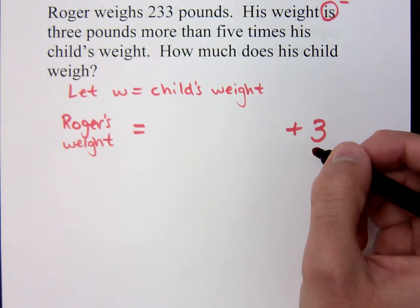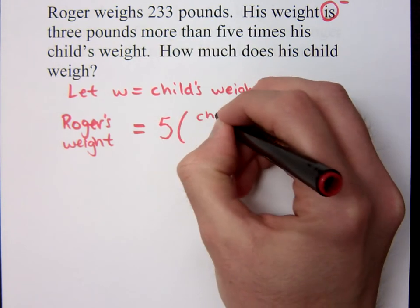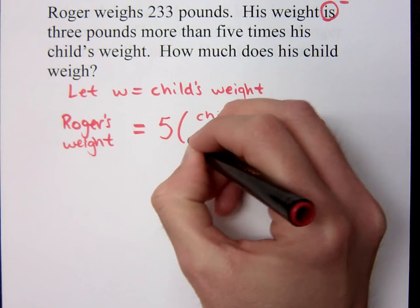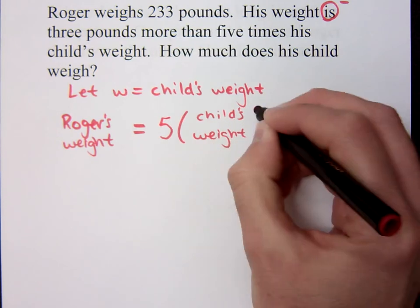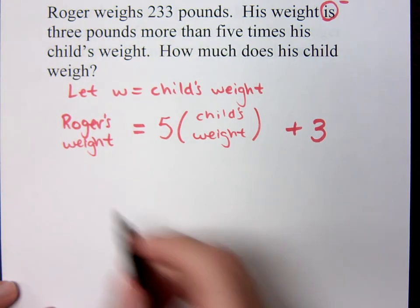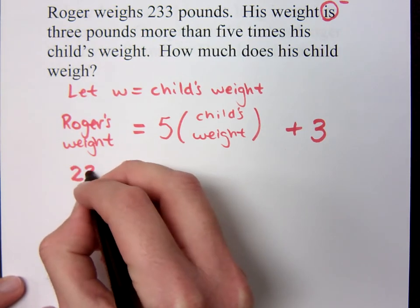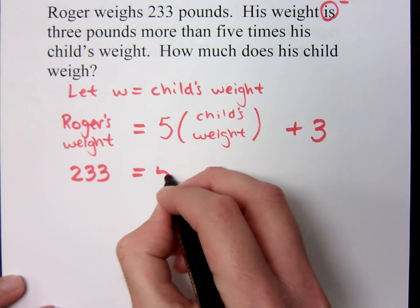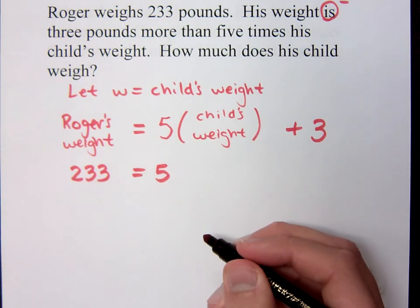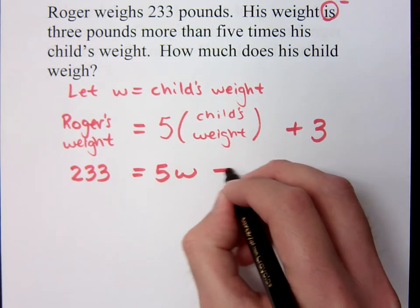To what are we adding three? Five times the child's weight, right? So five times, five times the child's weight. So what I have here is kind of an equation, but it's kind of still the words, right? So what is Roger's weight? His weight, Roger's weight is 233 pounds. Here's the five, and how are we representing the main unknown here of the child's weight? With a W, and of course, there's the plus three.